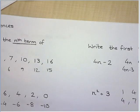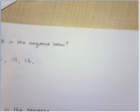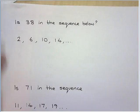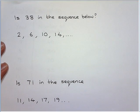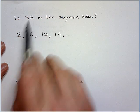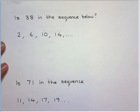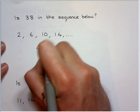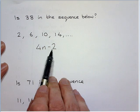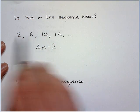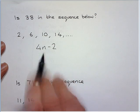Now what they also like to do is ask questions like this. So is 38 in the sequence below? So sometimes it's literally as easy as, well, that's even and they're odd, so no. But in this case they're all even. So let's work out the nth term. You should be able to see it's in the 4 times table, but it's 2 less. So this is the sequence for which every number is in. So is this number equal to this?